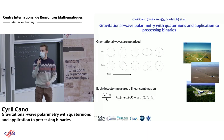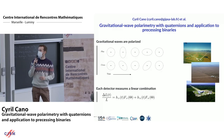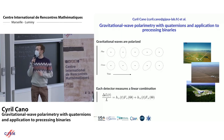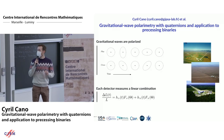Gravitational waves are polarized, meaning there are two orientations of deformation of space-time: plus and cross polarization. When a gravitational wave passes through the Earth, each detector measures a linear combination of signals associated with each polarization, H-plus and H-cross. H-plus and H-cross are amplitude- and frequency-modulated signals, and their relation is defined by source properties — which is what we want to characterize.